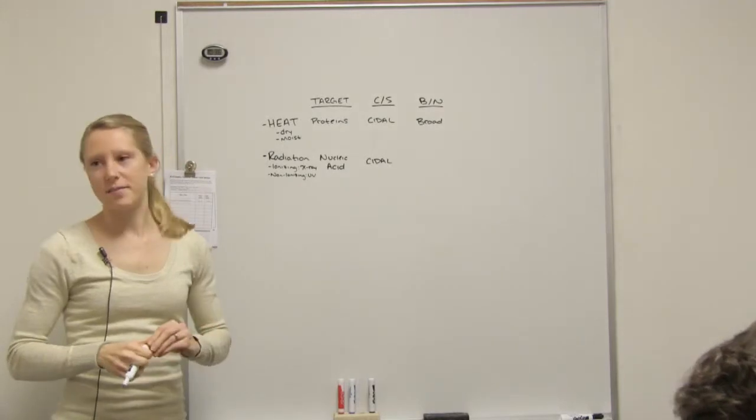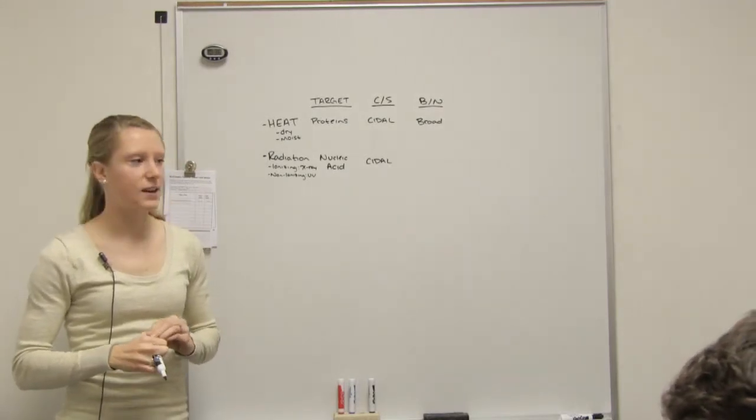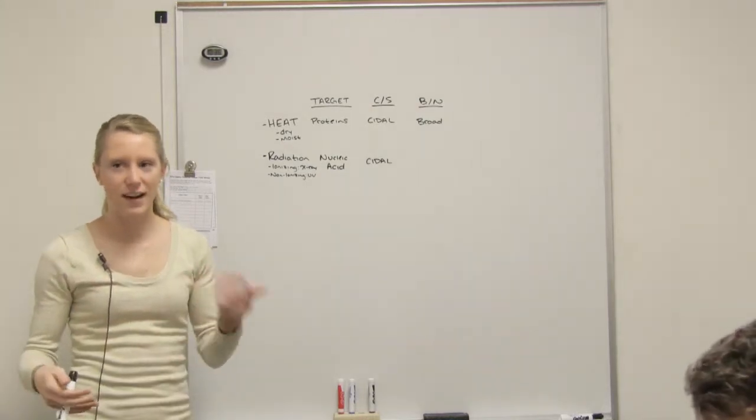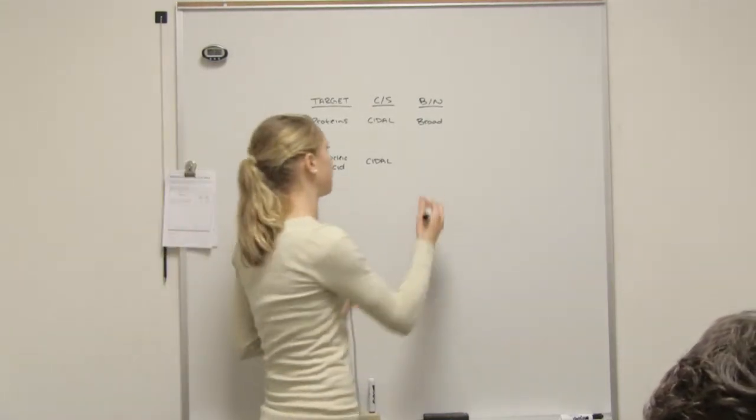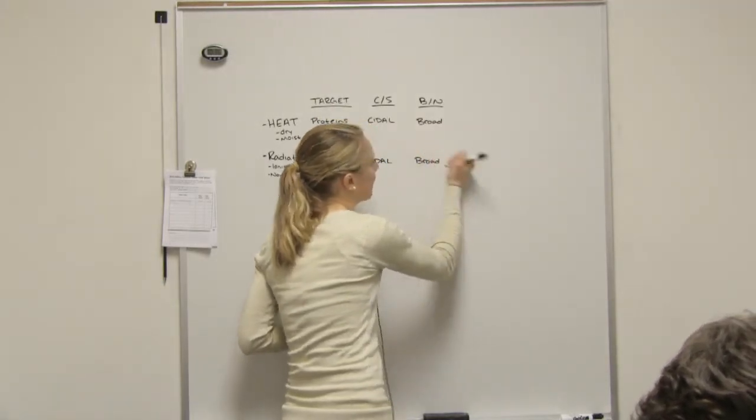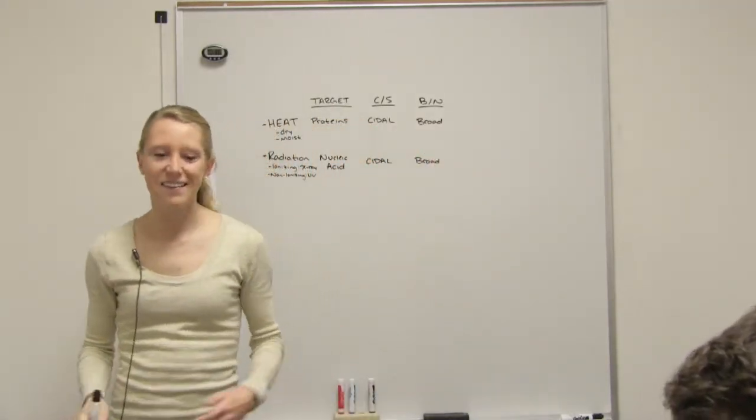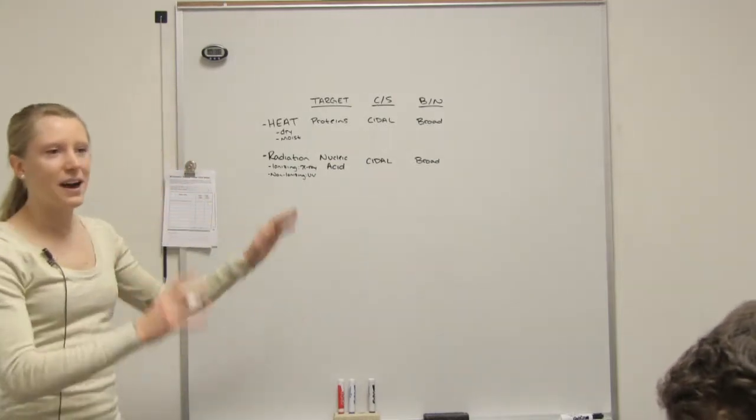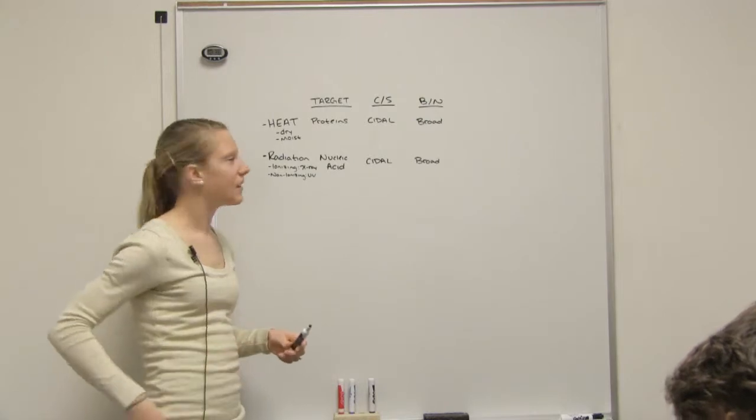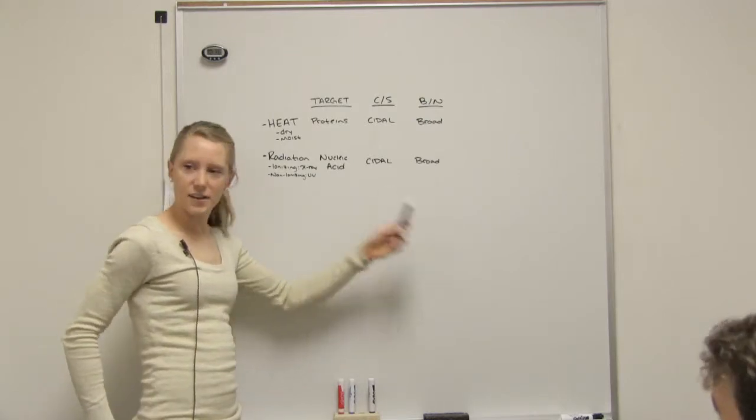And it's going to come up two more times. There are two antibiotics that are nucleic acid, and guess what? They're both cidal. Now, broad or narrow? Broad. Why do you say that? Because they both have nucleic acid. Yeah. Bacteria have nucleic acid, viruses have nucleic acid, so it's broad. I will tell you, you're probably thinking wow this is super easy. It does get harder. But this is good practice to get your mind thinking this way.